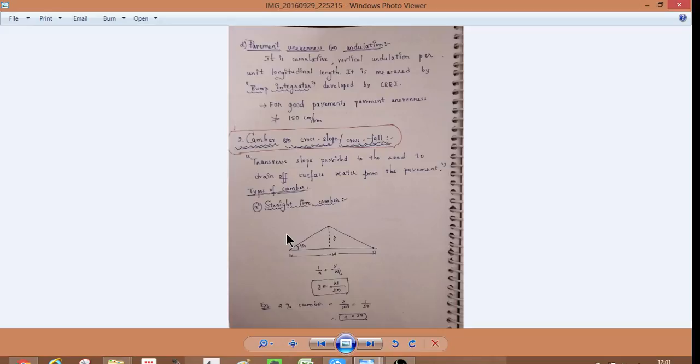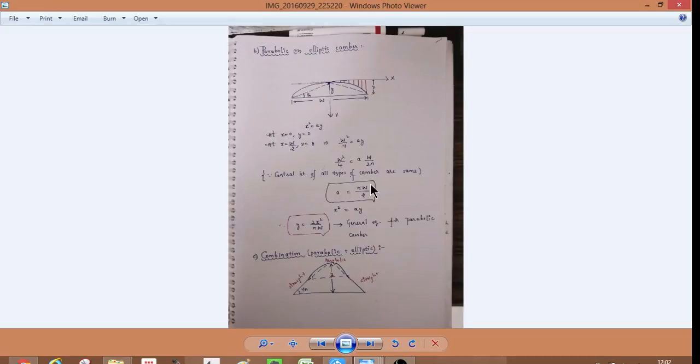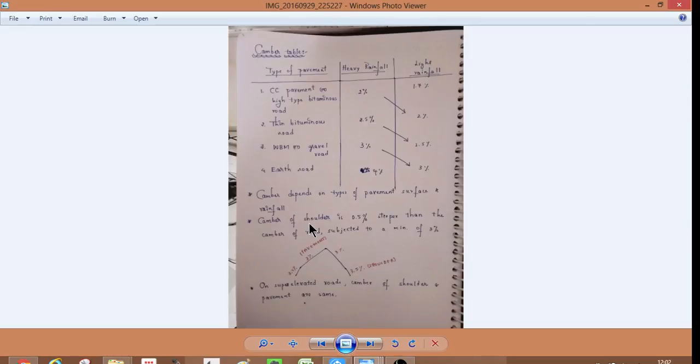So camber is provided, see the transfer slope provided to the road to drain off surface water from the pavement. So these, it can be a parabolic straight line combination. You need not remember this. Then you have the camber table. You need not remember this also. So if there is a curve, the different cambers are provided.